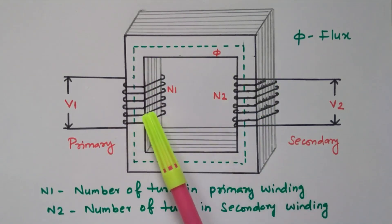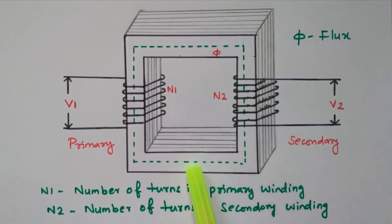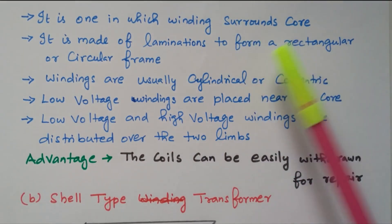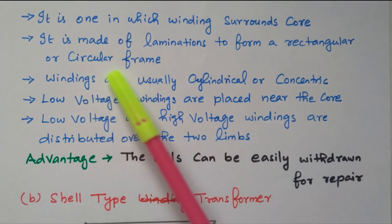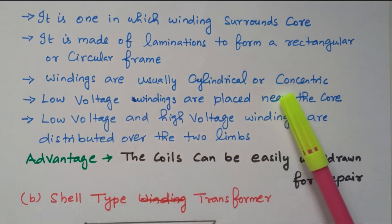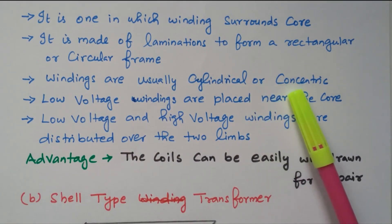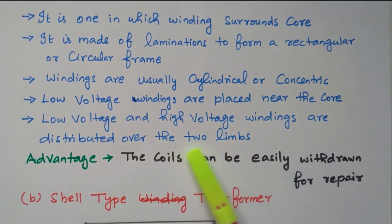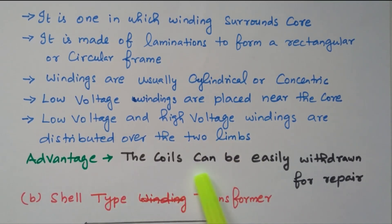In the core type, the coils are available and over the coils the core is placed — so it is called a winding surrounding the core. It is made of laminations to form a rectangular or circular frame, and the windings are usually cylindrical or concentric type. Low voltage windings are placed near the core, and low voltage and high voltage windings are distributed over the two limbs. The main advantage is the coil can be easily withdrawn for repair, since we can remove the core easily to access the coil.